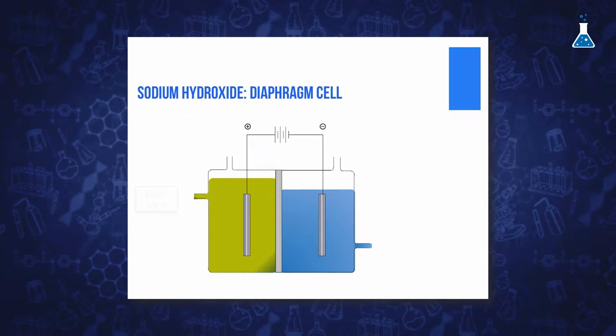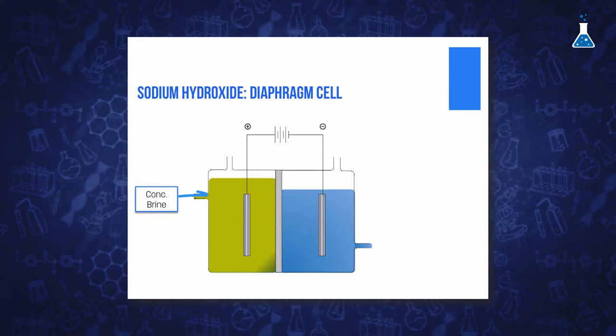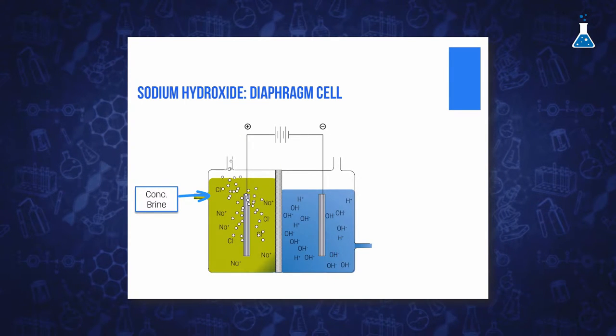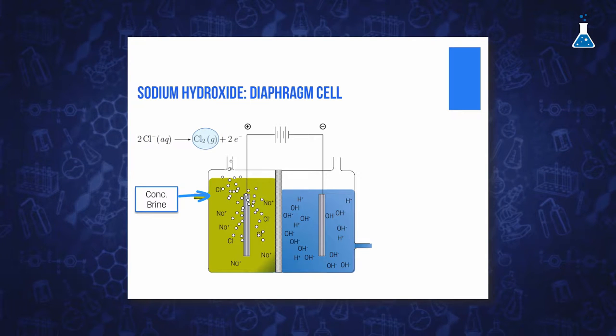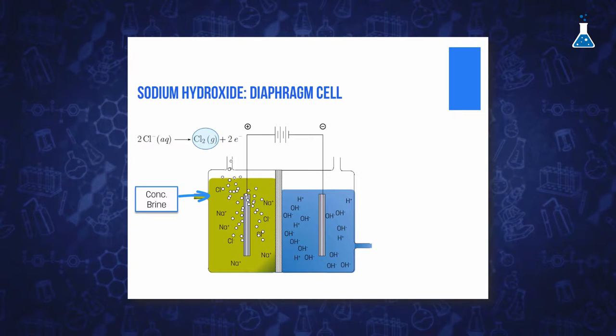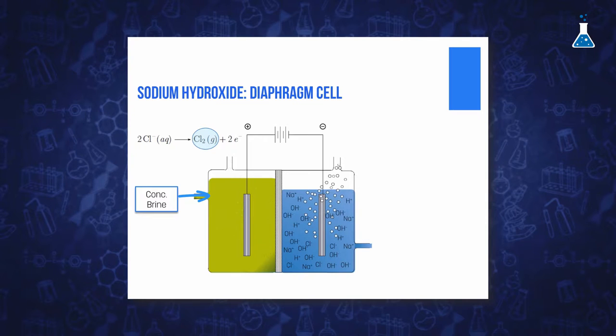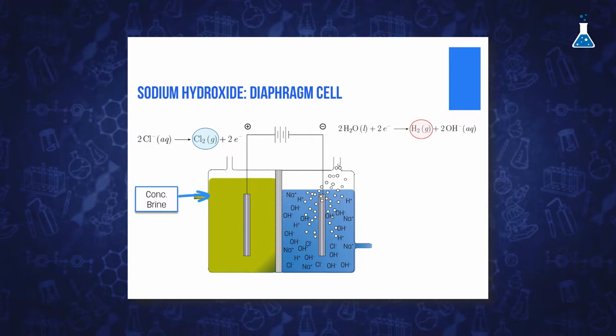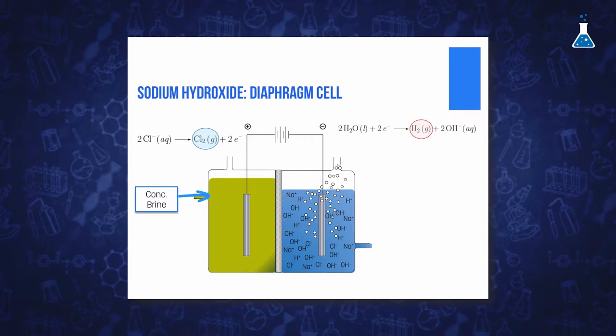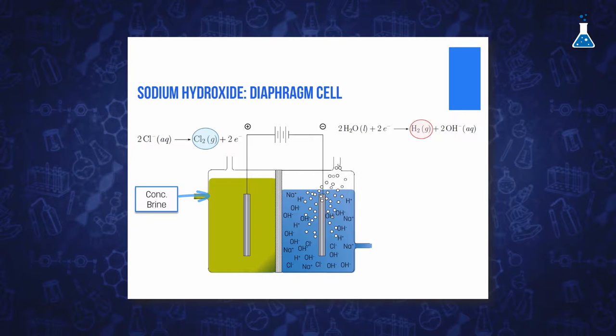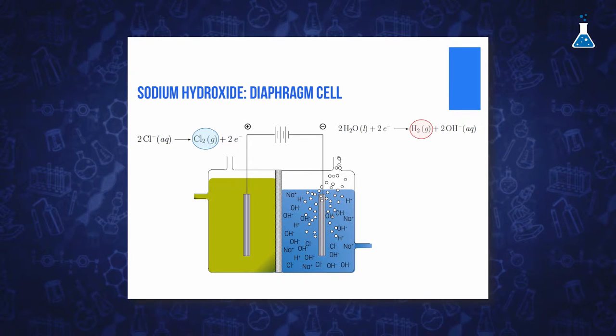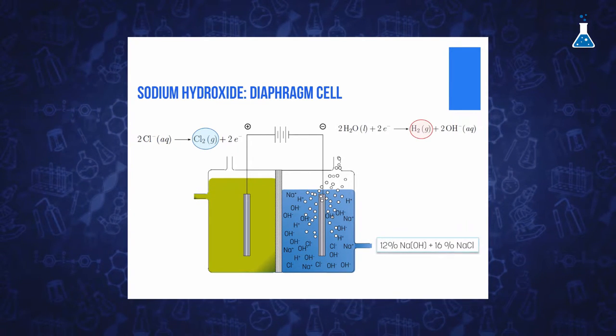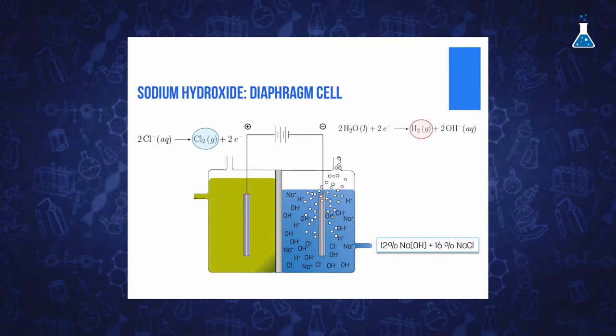Brine enters into the anode compartment where chloride ions are oxidized to chlorine that is drawn off upwards. The resulting solution rich in sodium ions flows through the diaphragm separator into the cathode compartment where hydrogen is formed. The resulting solution in the cathode contains both sodium hydroxide and sodium chloride.